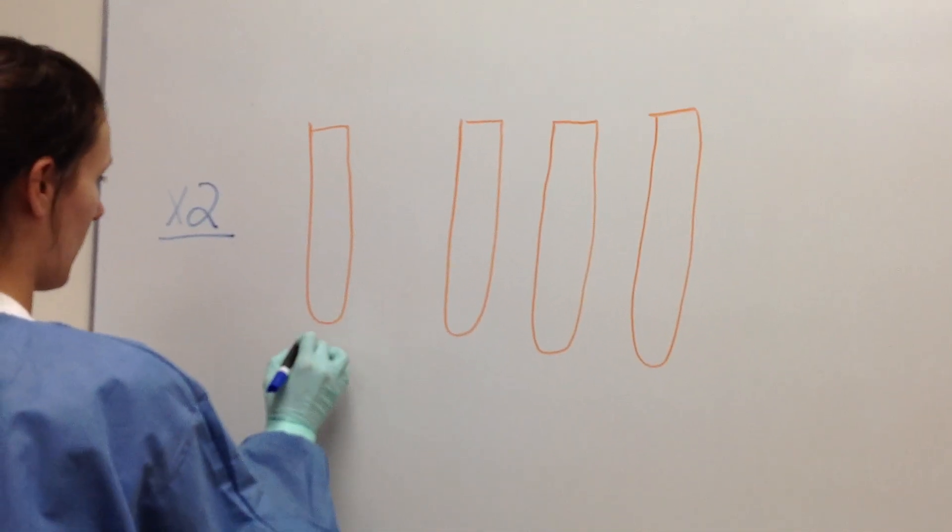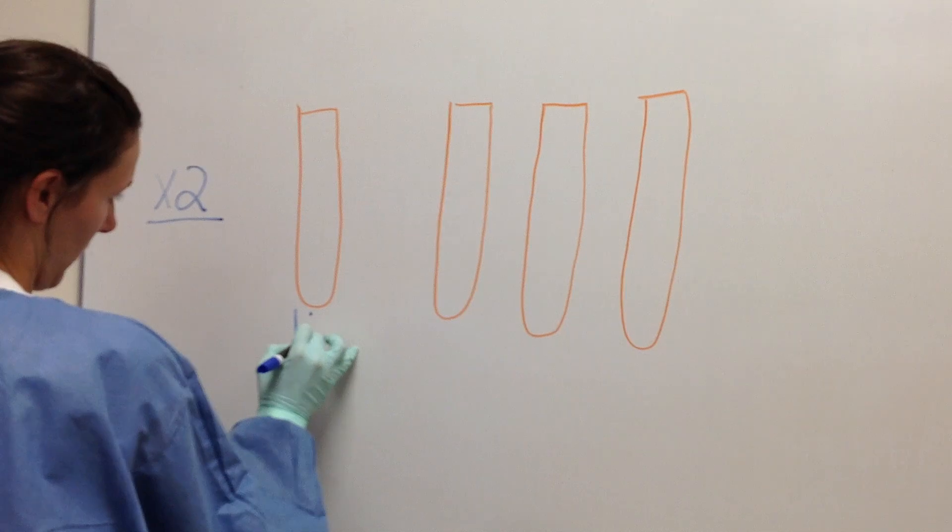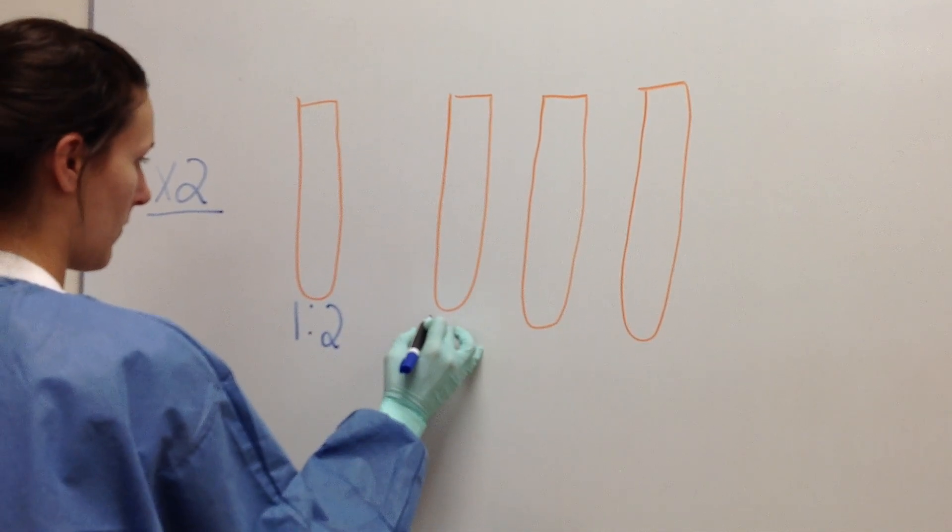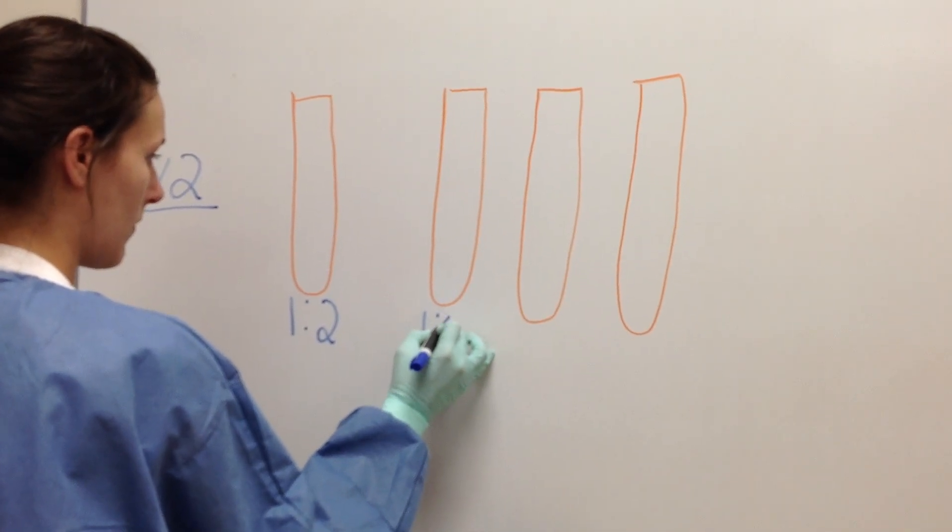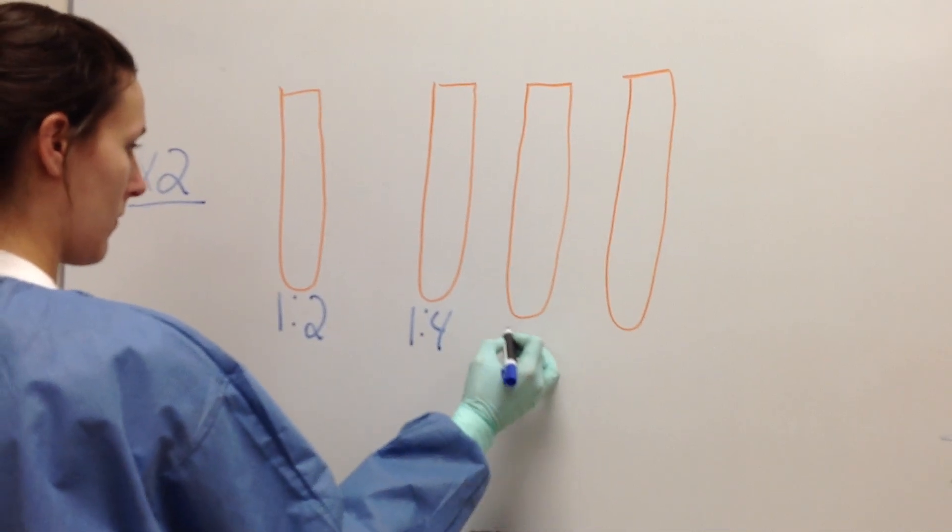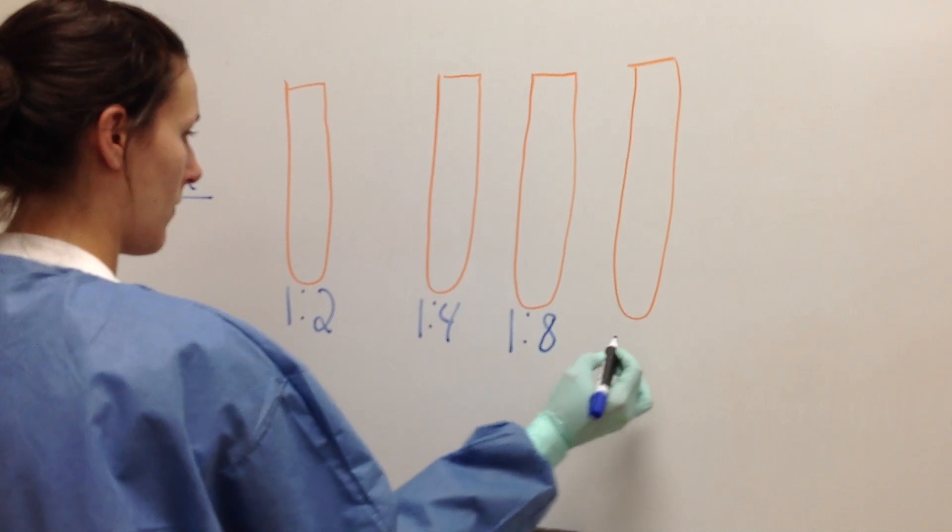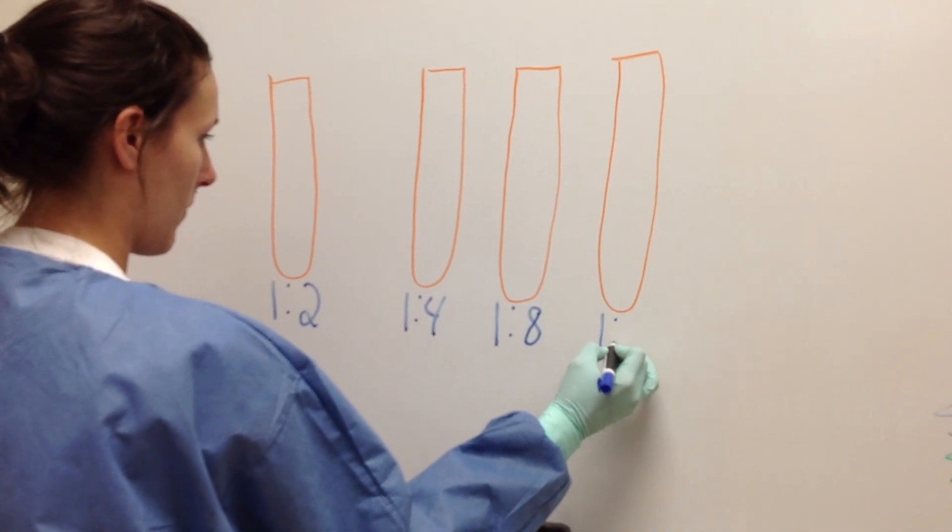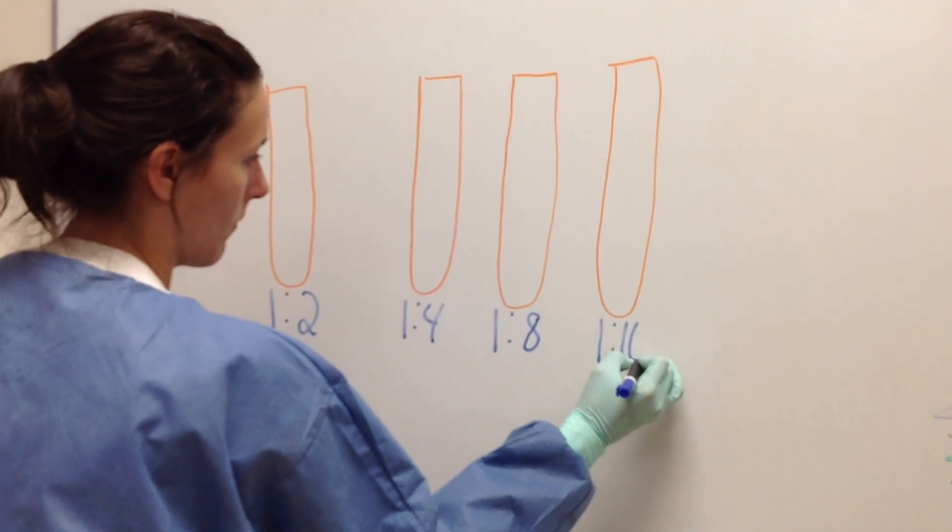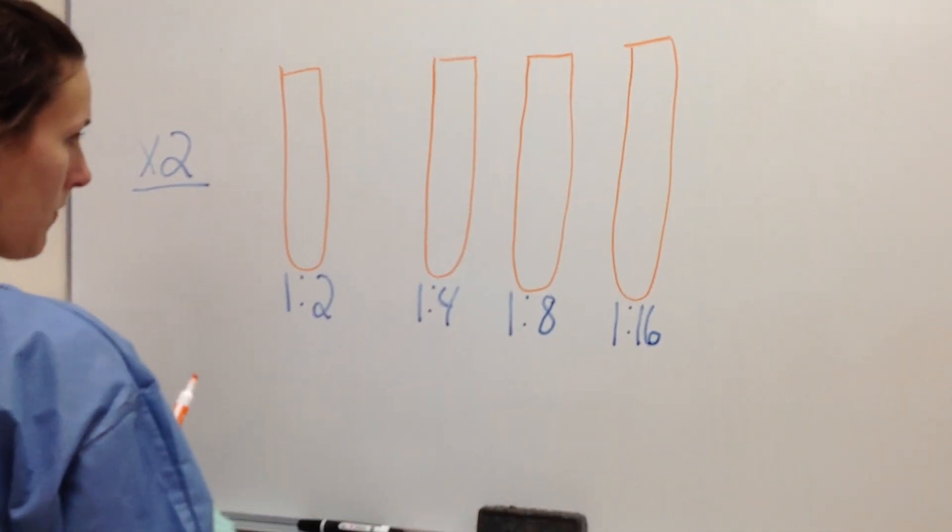So Kim's going to label 4 tubes. The first one is 1 to 2. We're making a times 2 of it, so that's a 1 to 4. And then a times 2 of that one makes a 1 to 8. And a times 2 of the third tube makes a 1 to 16.